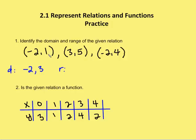My range is going to be all the outputs. I have 1, 5, and 4. And typically you want to write them in order, sequential order from increasing or from the smallest number to the largest number.